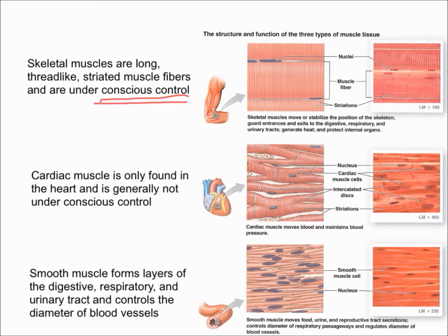Finally, smooth muscles are probably the most complex out of all of them. Smooth muscle forms layers of the digestive, respiratory, and urinary tract, and also controls the diameter of blood vessels. By controlling the diameter of blood vessels, smooth muscle has an important impact on how blood flows as well as blood pressure. As shown in the diagram, smooth muscle also moves food, urine, and respiratory tract secretions.